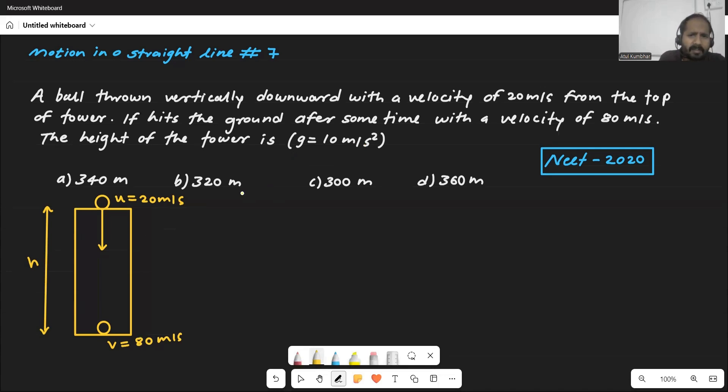That's v square minus u square is equal to 2gh. We need to find out h, so it will be v square minus u square divided by 2g, where v is 80, so 80 square is 6400, minus u which is 20, 20 square is 400, divided by 2 into 10.